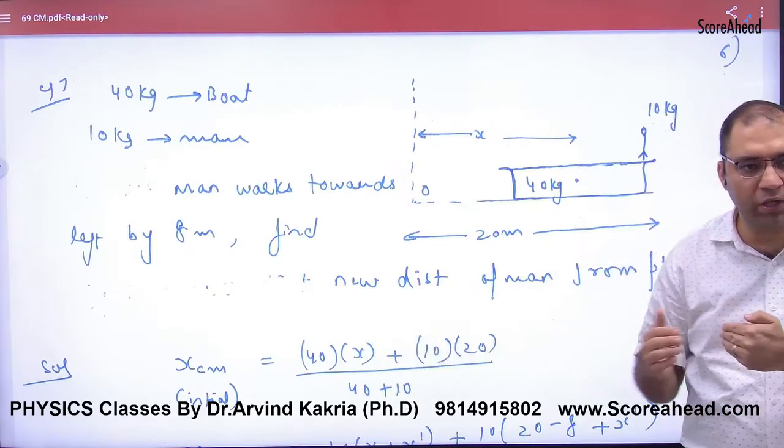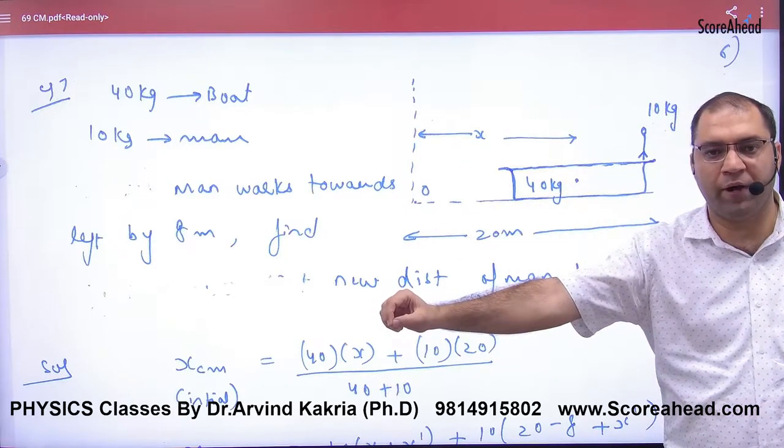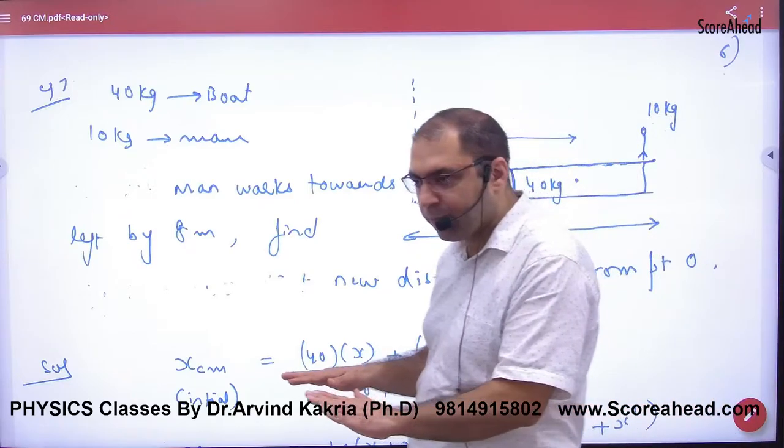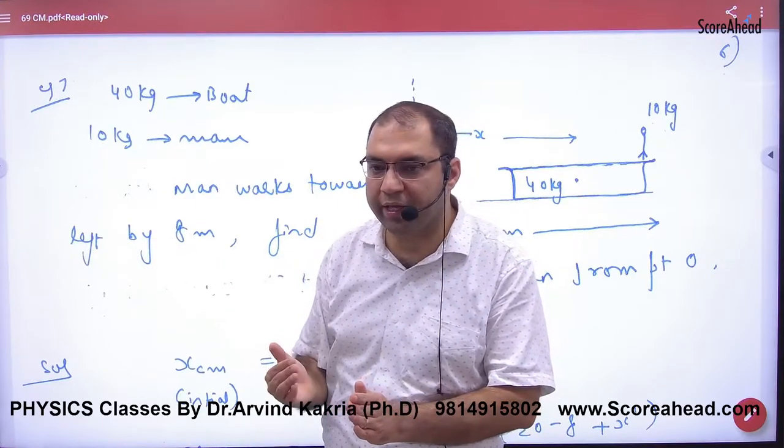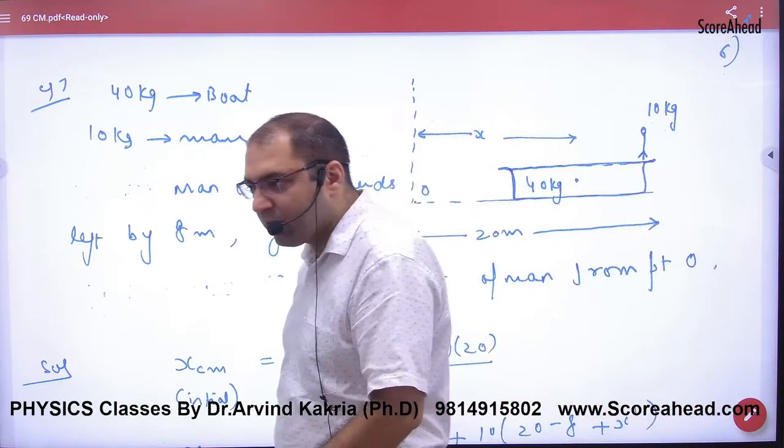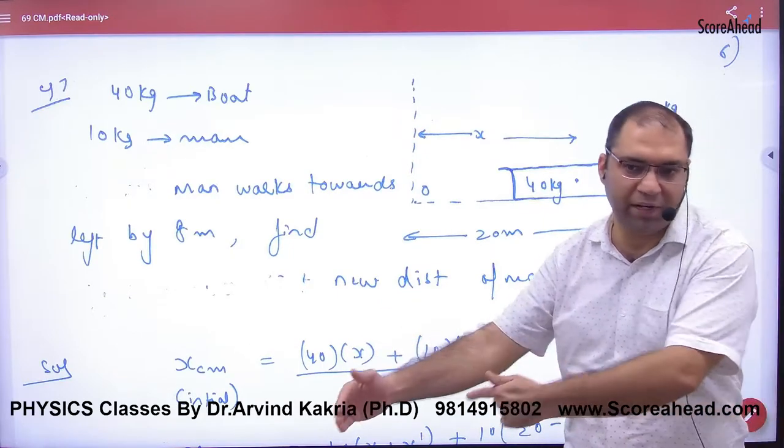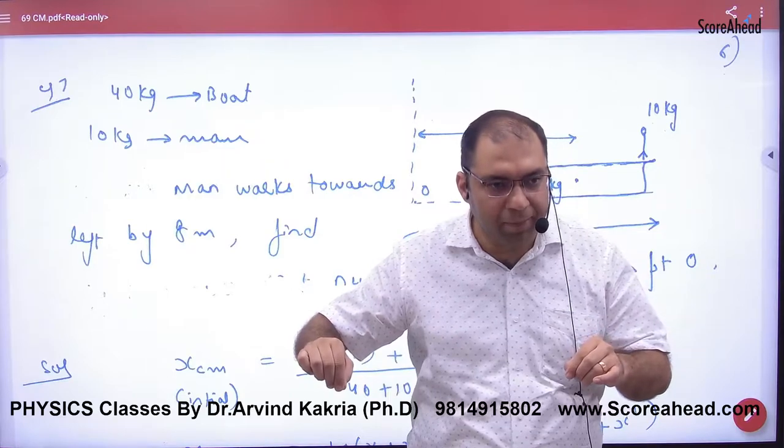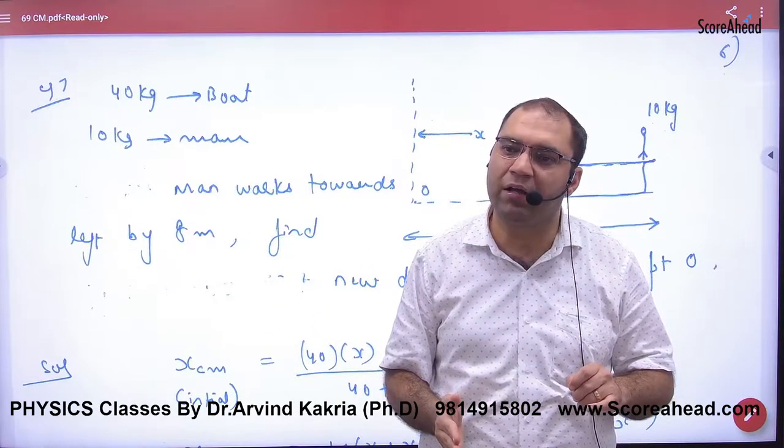What do you want to tell about this? This is at rest initially. A man is 20 meters away from this cone, 8 meters behind. If man walks towards the cone, if the boat moves, then how much is left from the cone now? If X dash was equal to 1, then the final answer is 12 plus X dash.